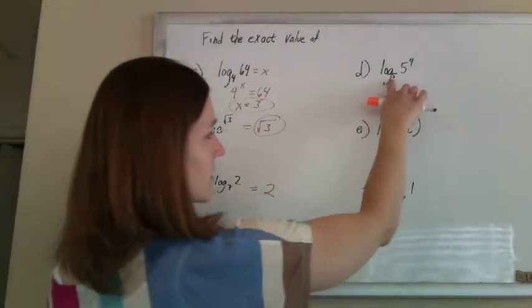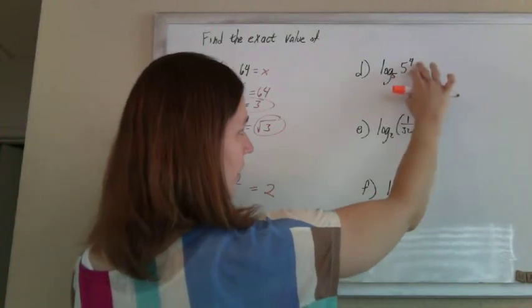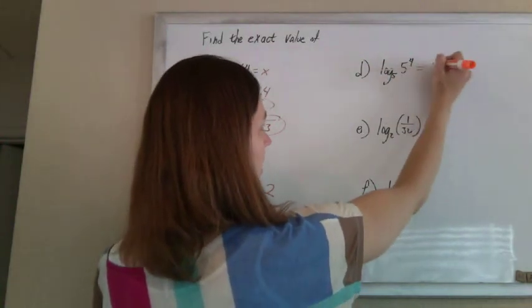This one here, same thing. If the base, those bases are the same, the log and the exponent cancel each other out and give you a 4.